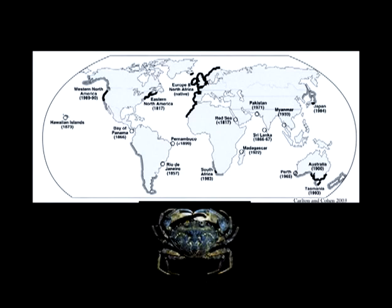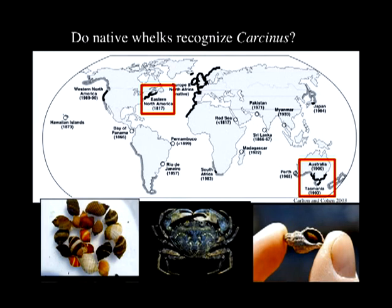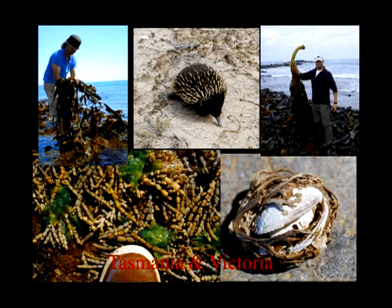Looking at a broader scale: green crabs are native to Europe and North Africa. They've been introduced to eastern North America for over 100 years and also to Australia for over 100 years. I'm going to compare these two regions — Australia and North America — to look at how whelks in different regions respond to green crabs. I'll focus first on the Australian system.